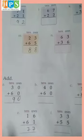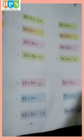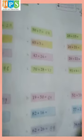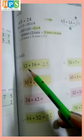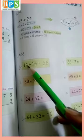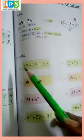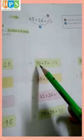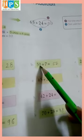Come to the next page, page number 61: row addition. 12 plus 16. 2 plus 6 equals 8, 1 plus 1 equals 2. So 12 plus 16 equals 28. 50 plus 7: this is the 1s digit — 0 and 7 equals 7, and 5.